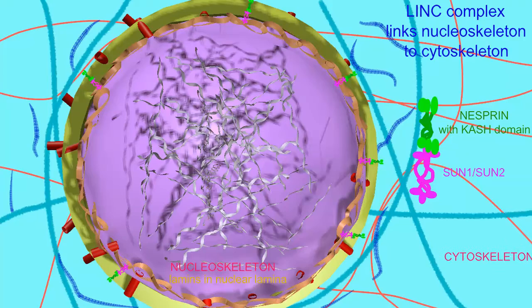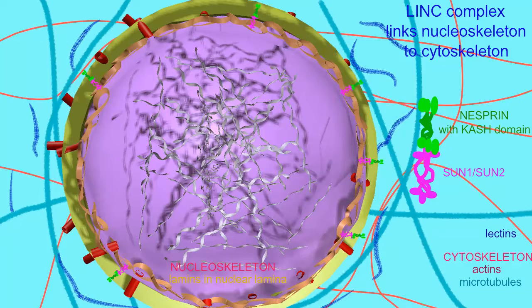it allows for the interaction of components on either side of the nuclear membrane. So, for example,